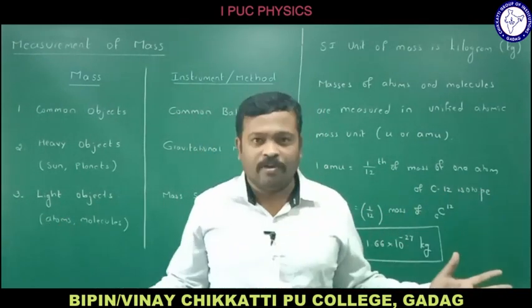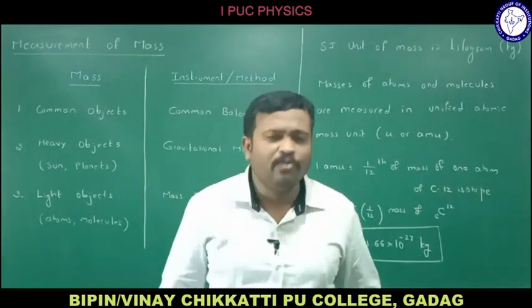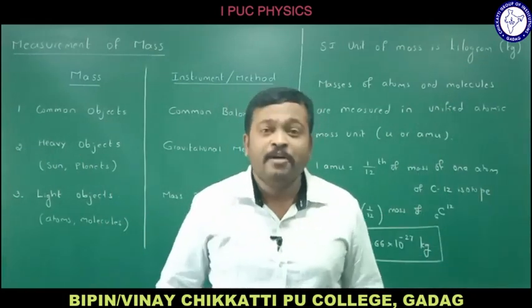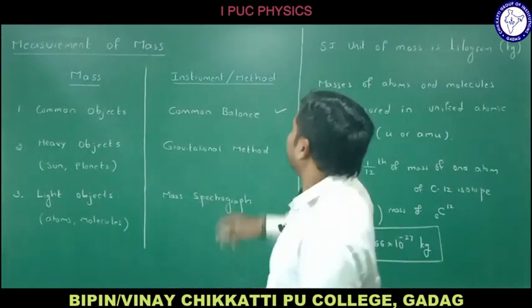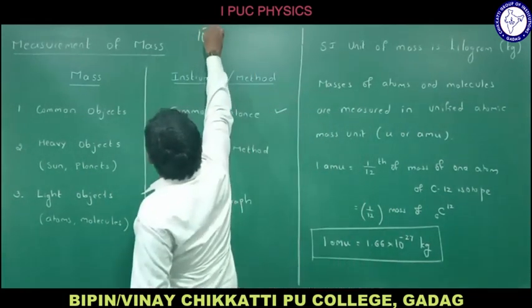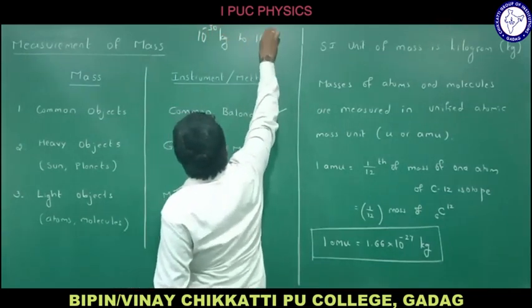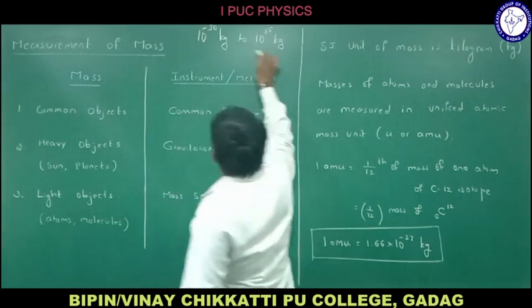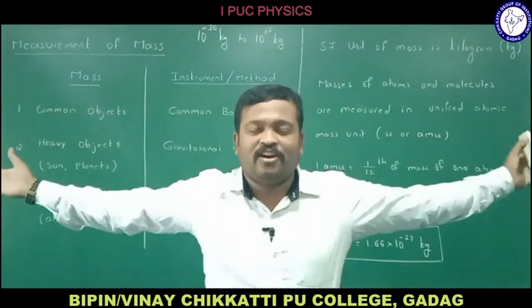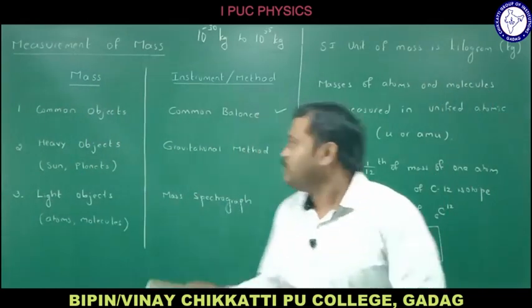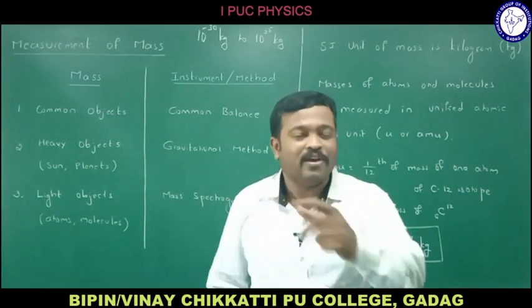The masses of objects range from the mass of an electron to the mass of the observable universe — from 10⁻³⁰ kg to 10⁵⁵ kg. This is the entire range of mass, and this is how mass can be measured.